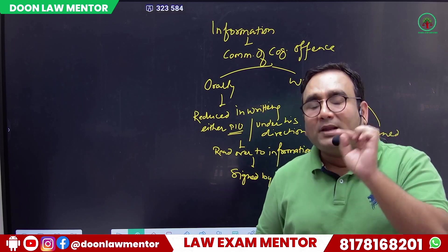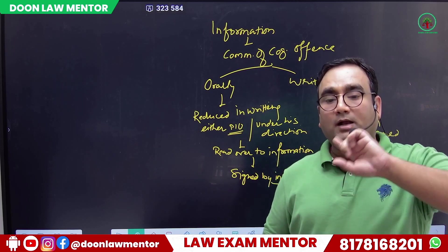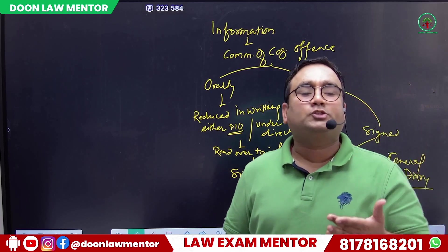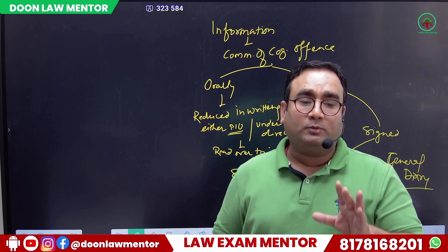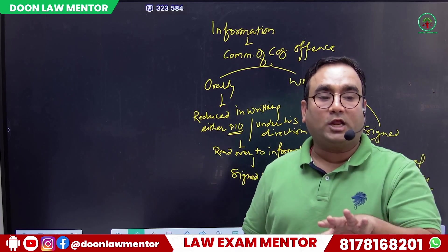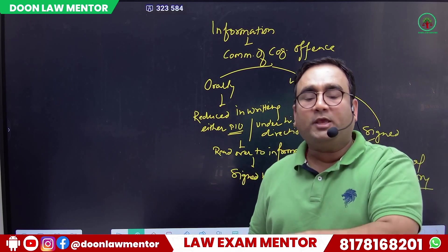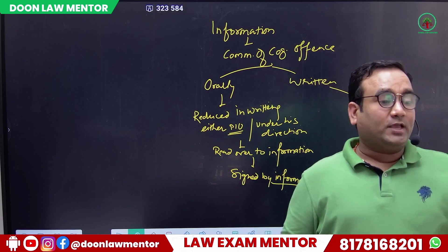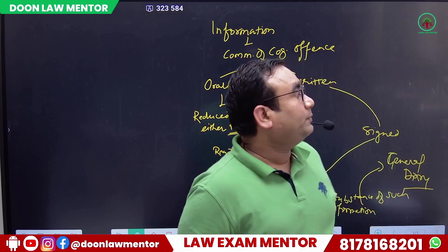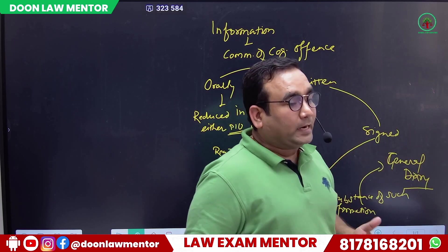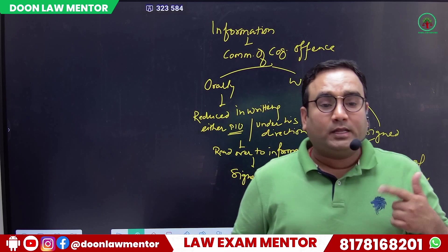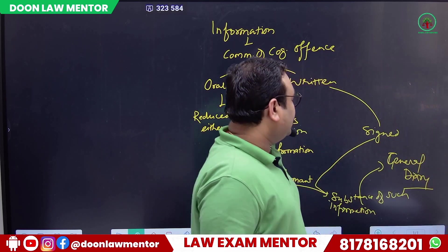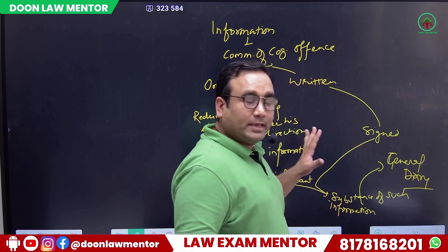The FIR entry includes: serial number, date, place where the crime occurred, and other relevant details. This applies when it is a jurisdictional FIR — meaning the crime occurred within the area of that particular police station. For Zero FIR, however, a serial number is not written — that we will discuss separately.